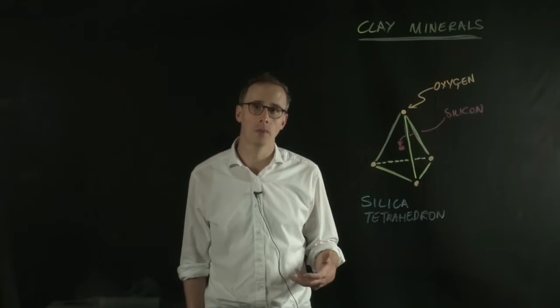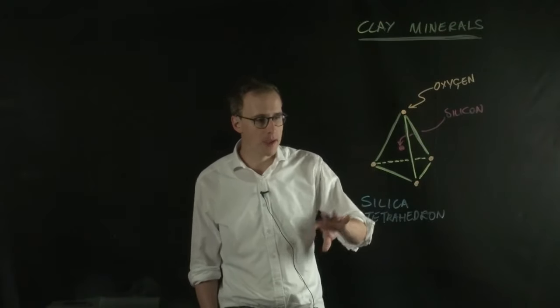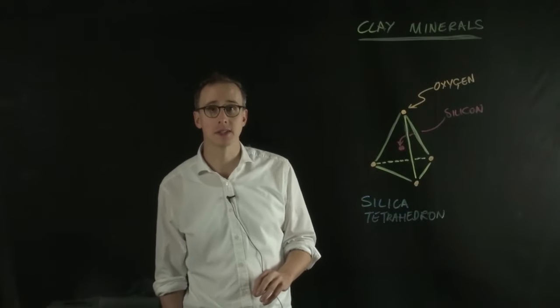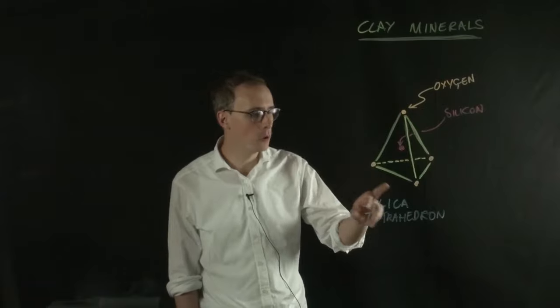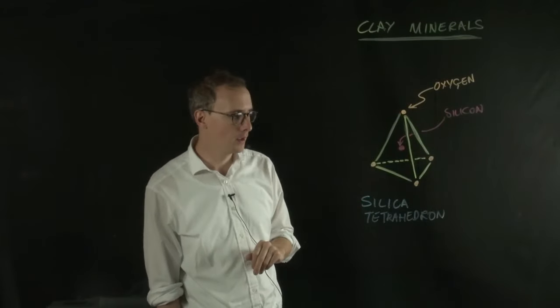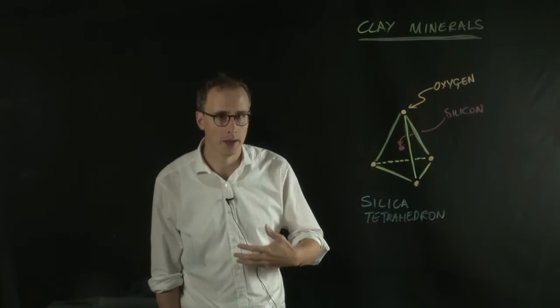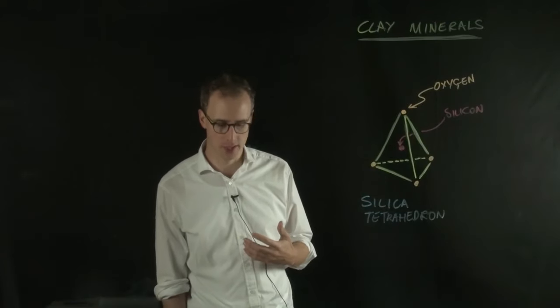Clay minerals are silicate minerals. That means that they're based around this arrangement of atoms. The arrangement of atoms is called a silica tetrahedron, where we have four oxygen atoms surrounding a silicon atom. That's the building block of all silicate minerals, and clay minerals form sheets of these silica tetrahedron.